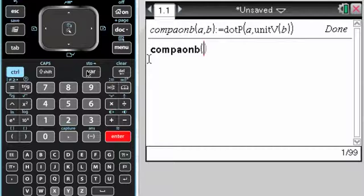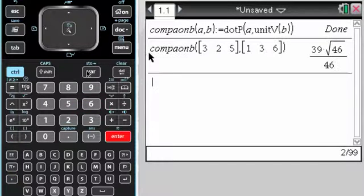And I give it, so it's A, let's say [3, 2, 5], along B, let's say is [1, 3, 6]. And it just does the calculation for me.